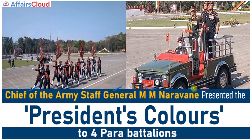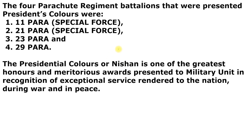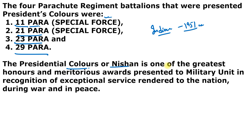Chief of Army Staff General M.M. Naravane presented the President's Colour to four para battalions — 11 Para (Special Forces), 21 Para, 23 Para, and 29 Para — on behalf of President Ramnath Kovind. The first Presidential Colour was presented to the Indian Navy in 1951 by Dr. Rajendra Prasad, the then President of India. The Presidential Colour is one of the greatest honors presented to a military unit in recognition of exceptional service during war and in peacetime. In September 2021, the Presidential Colour was also awarded to Indian Naval Aviation.